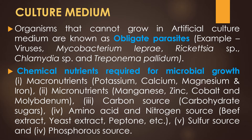Examples of some obligate parasites are viruses, Mycobacterium leprae, Rickettsia species, Chlamydia species, and Treponema pallidum. Some of the chemical nutrients required for microbial growth are macronutrients like potassium, calcium, magnesium, and iron, and micronutrients like manganese, zinc, cobalt, and molybdenum.